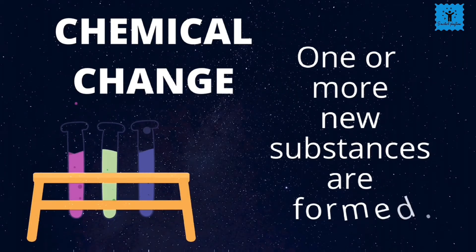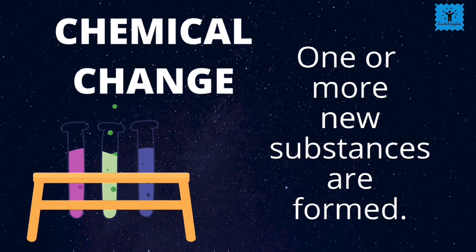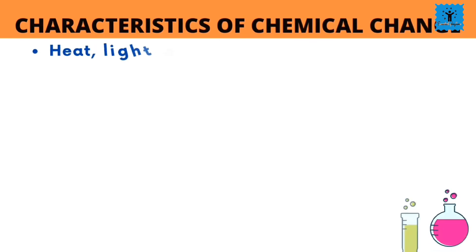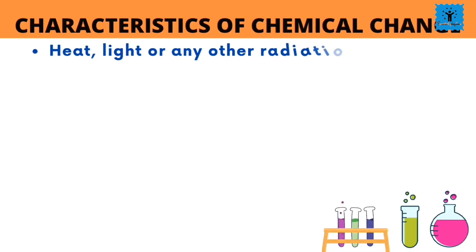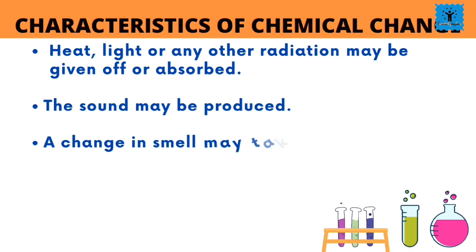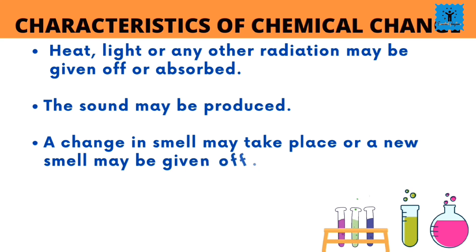So we have seen that one or more new substances are formed in a chemical reaction. In addition to forming new products, following may occur in a chemical change: heat, light, or any other radiation may be given off or absorbed; sound may be produced; a change in smell may take place or a new smell may be given off; a color change may take place; a gas may be formed.